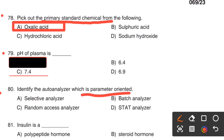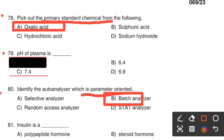Next question. Identify the autoanalyzer which is parameter oriented. Option A, Selective analyzer. Option B, Batch analyzer. Option C, Random access analyzer. Option D, Stat analyzer. The right answer is Option B, Batch analyzer.